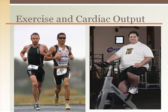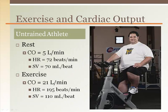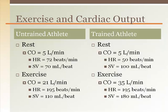During exercise, cardiac output increases to accommodate the increased oxygen demand by the working muscles. At rest, a normal cardiac output is around 5,000 mL per minute, or around 5 L a minute. During exercise, cardiac output can reach 21 L per minute in an untrained individual, or 35 L per minute in a trained athlete.